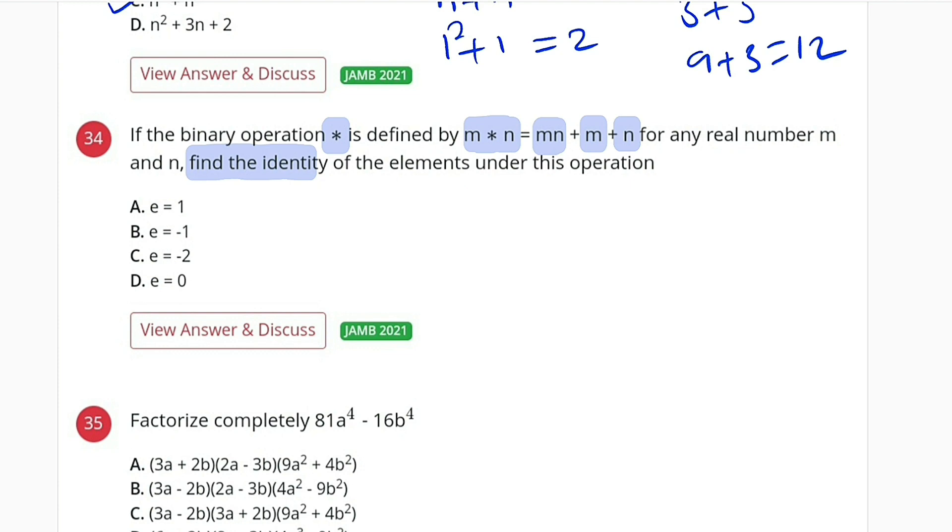What does an identity element do to a value? It doesn't change it. For example, under multiplication, if you have 2 multiplied by 1, it equals 2. 3 multiplied by 1 equals 3. Under multiplication, whatever number you take, you multiply by 1 is still that number. Therefore, 1 is an identity under multiplication.